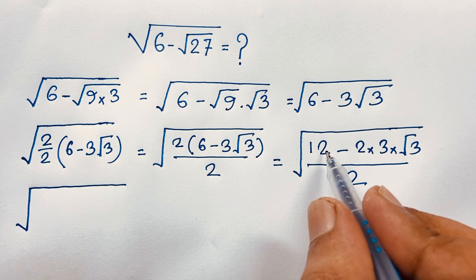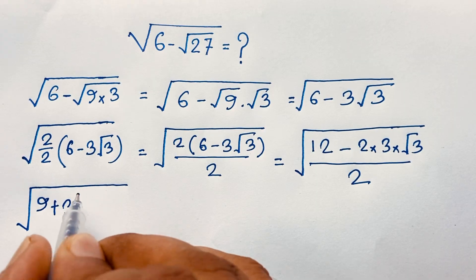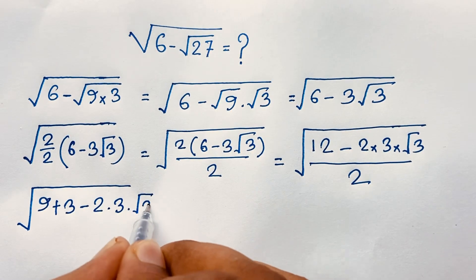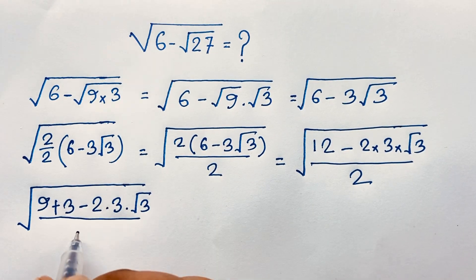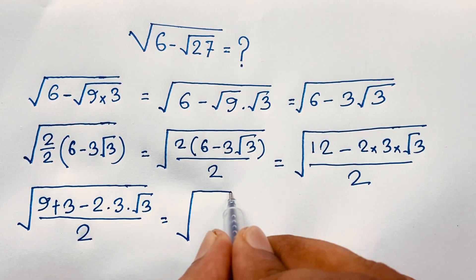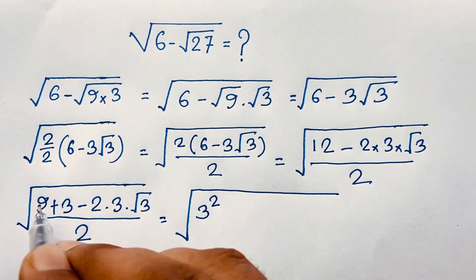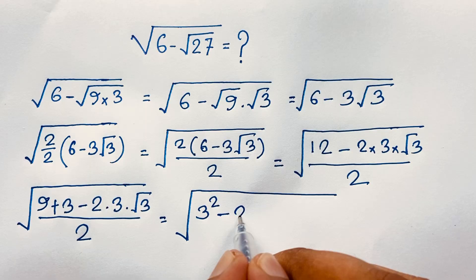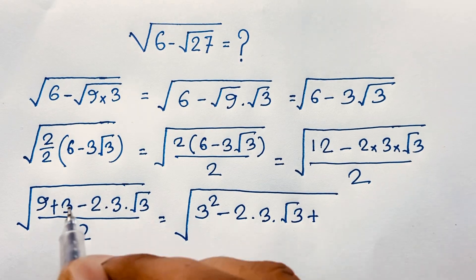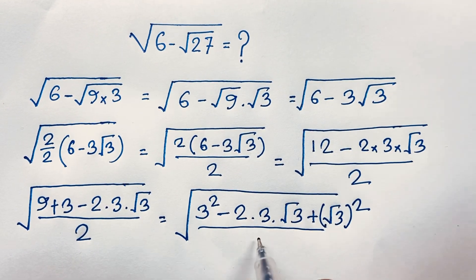We have this 12, and we know that 12 equals 9 plus 3. So the expression becomes 9 plus 3 minus 2 times 3 times 3 times square root of 3, all over 2. Now 9 can be written as 3 squared, and we take the value 3 and square root of 3, giving us 3 squared minus 2 times 3 times square root of 3 plus square root of 3 squared, all over 2.